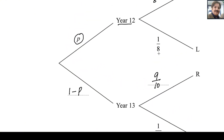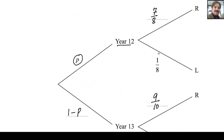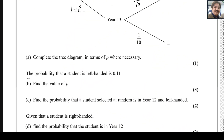So this tree diagram is now completed. For the next part: the probability that a student is left-handed is 0.11 — find the value of P.